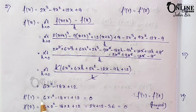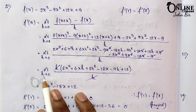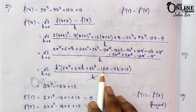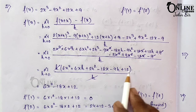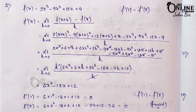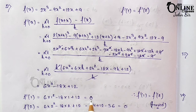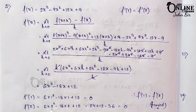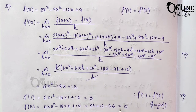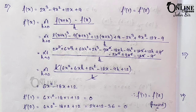After h cancels with denominator, substituting h→0: f'(x) = 6x² - 18x + 12. Now f'(1) = 6(1) - 18(1) + 12 = 0. And f'(2) = 6(4) - 18(2) + 12 = 36 - 36 = 0. So clearly f'(1) = f'(2), and it is proved.